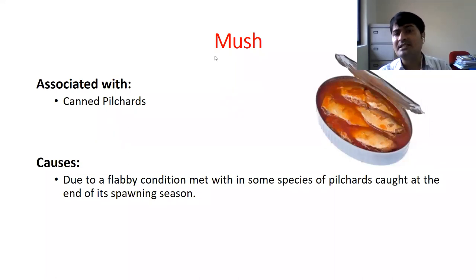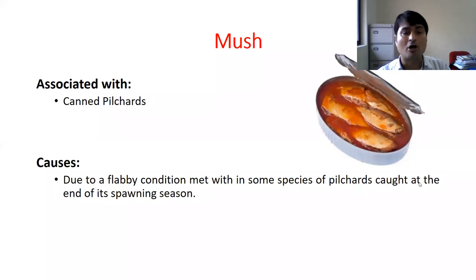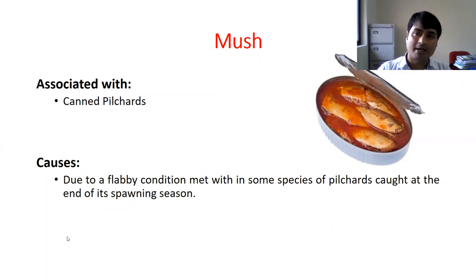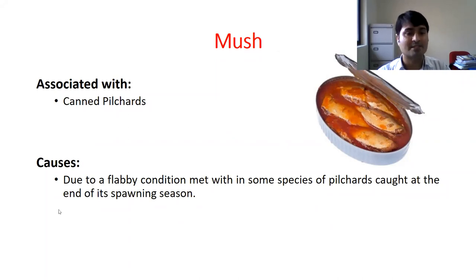So we are facing a mush problem in the case of canned pilchard. How does mush formation occur? Due to a flabby — meaning soft — condition in some species of pilchard when it is caught at the end of its spawning season. If we are catching pilchard and canning that species, then we may face the problem of mush condition.